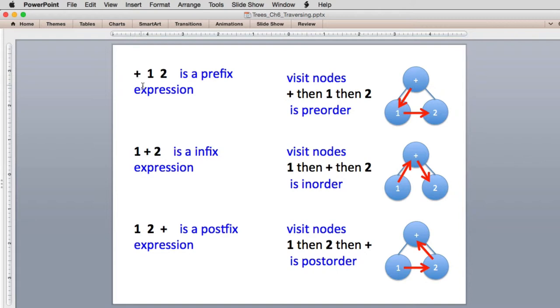So here's a prefix expression in math. You have the plus followed by the two operands. When you're in a tree, what you do is you visit the plus first, which is the root, and then you visit the one and the two. So this shows you the order you visit.